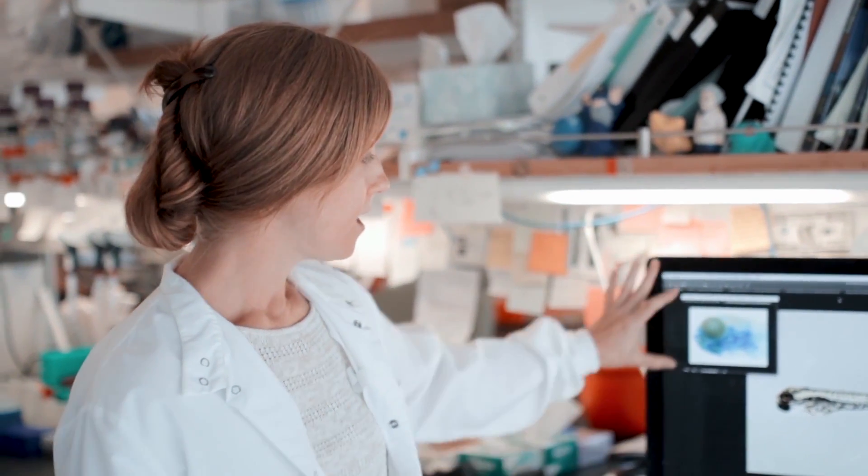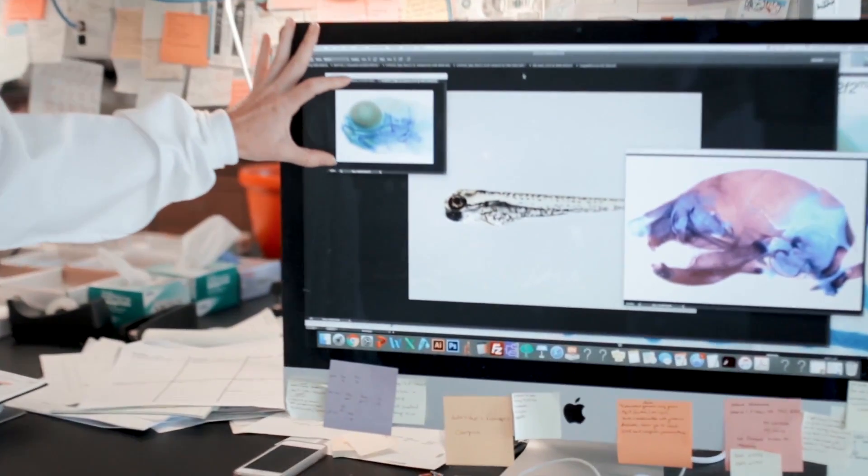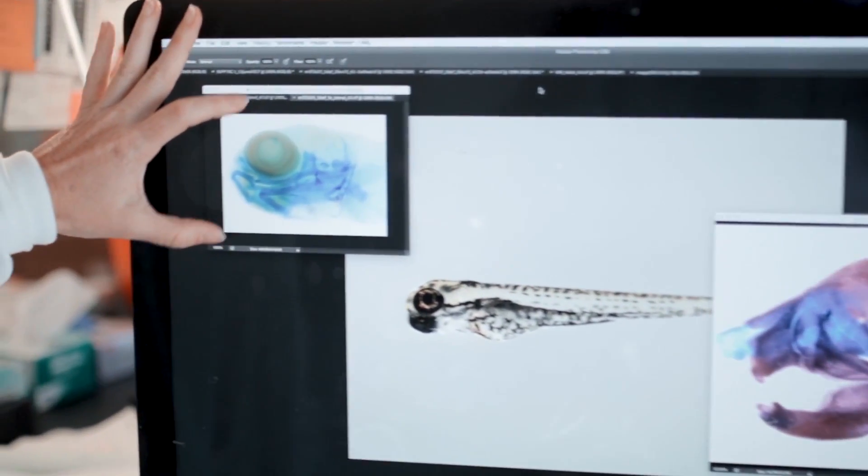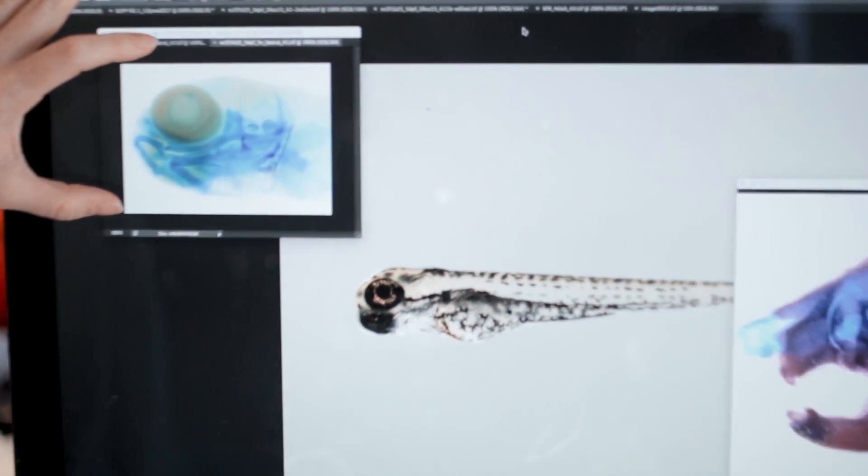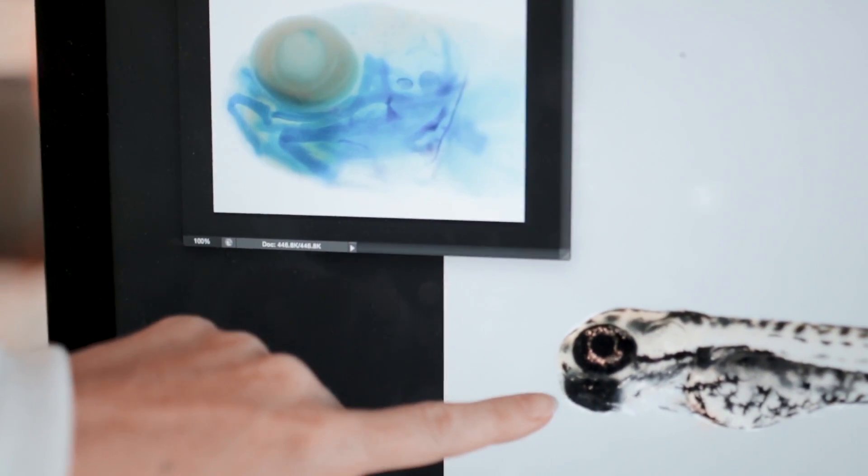For my project I started out by studying craniofacial development as it occurs in zebrafish. This picture here is an example of a zebrafish larval craniofacial skeleton with the cartilage stained in blue and the bone stained in red. It's about the same age as this guy over here.